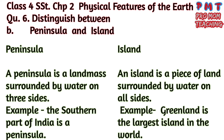Distinguish between peninsula and island. A peninsula is a landmass surrounded by water on three sides — for example, the southern part of India is a peninsula. An island is a piece of land surrounded by water on all sides — for example, Greenland is the largest island in the world.